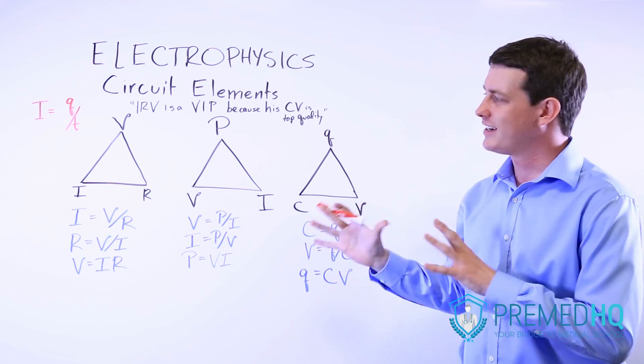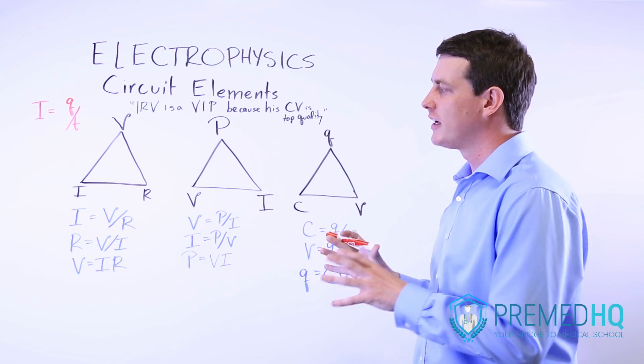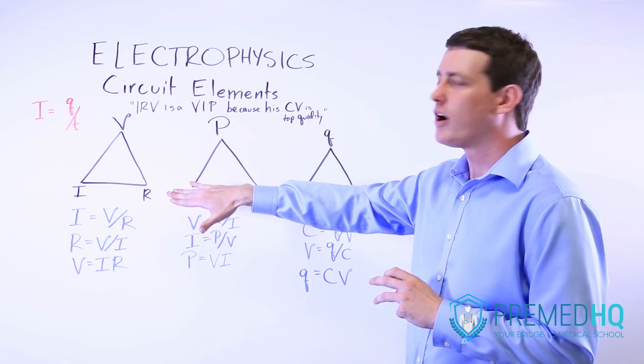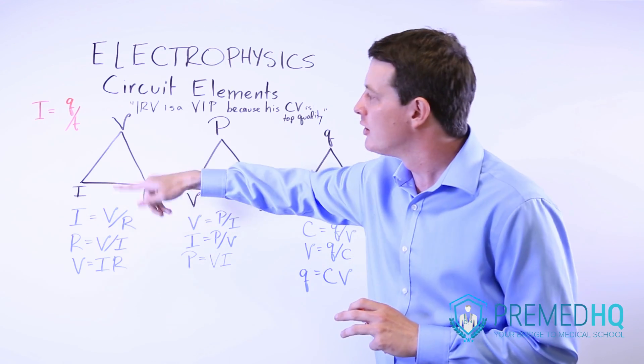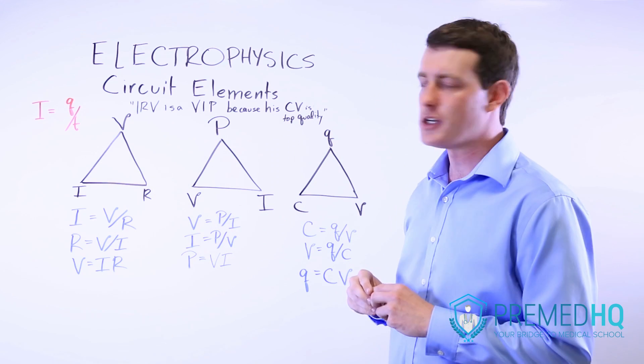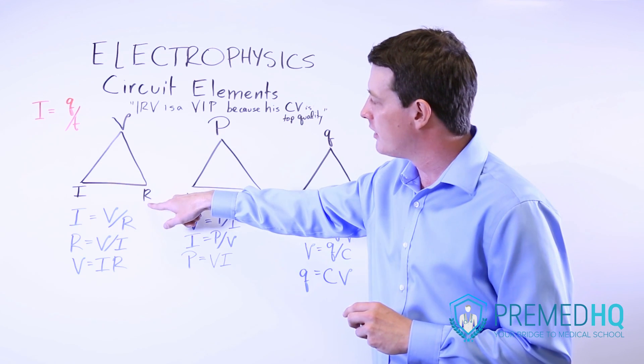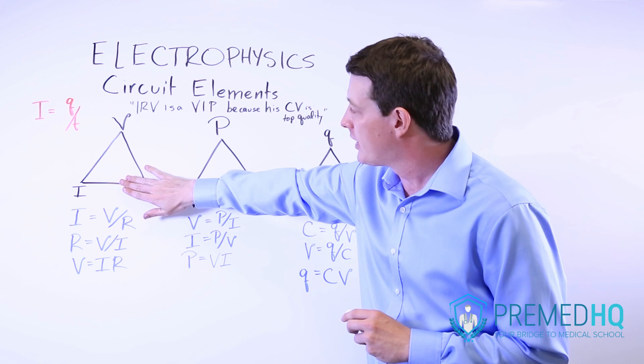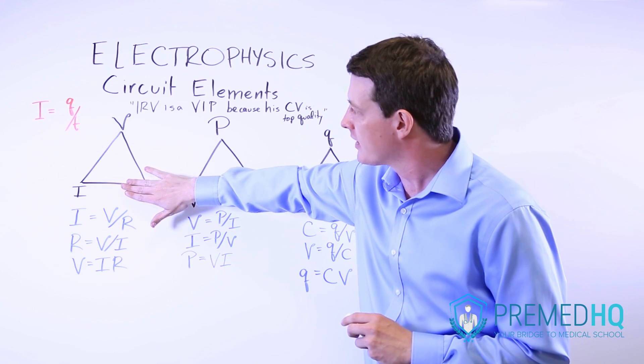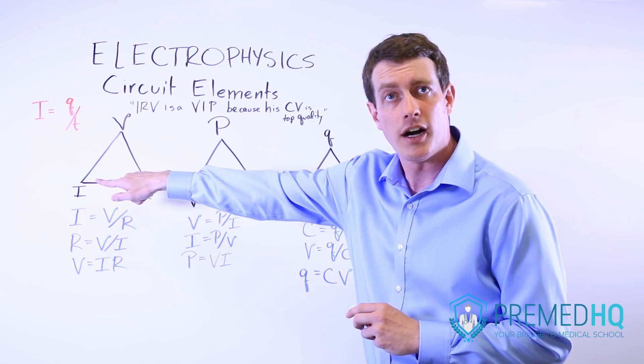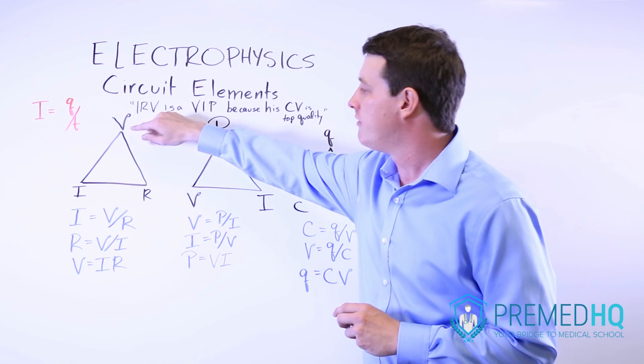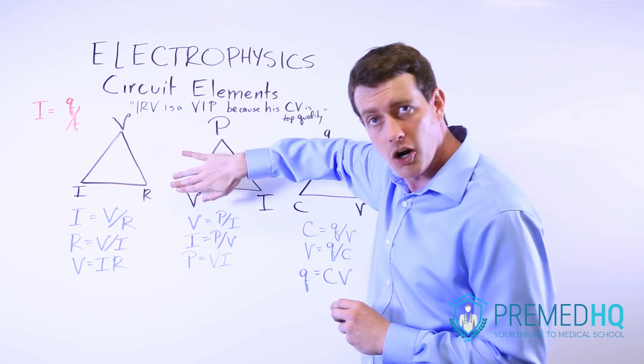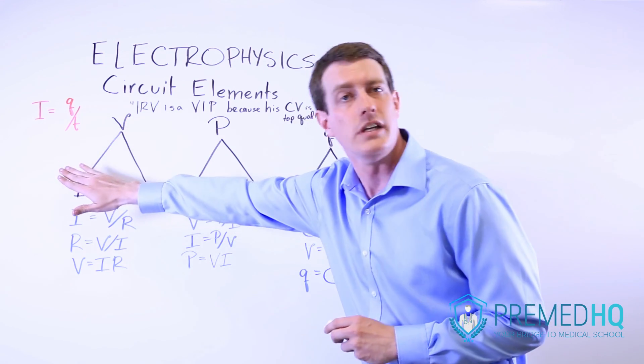And the way that this works is in any of these triangles, if you're trying to figure out what one of these quantities is, you just cover that up and look at the relationship of the other two. So for example, if we want to know what resistance is here, we cover up the R of resistance and we see that it equals V over I. If we want to know what V equals, V equals IR. I equals V over R.